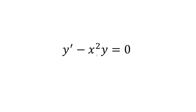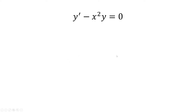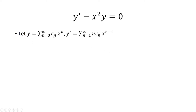Let's solve y prime minus x squared times y equals 0 using series. We'll let y equal the sum from n equals 0 to infinity of c sub n times x to the n. The derivative starts from n equals 1 to infinity, and the derivative of c sub n times x to the n is n times c sub n times x to the n minus 1.